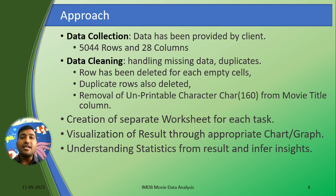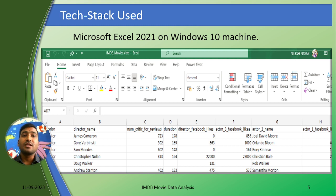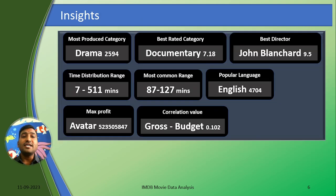I used charts and graphs to understand the statistics of the results from the data. I used Microsoft Excel 2021 on a Windows machine to perform this analysis. One key insight is that the drama category is the most produced category, with around 26,000 movies.